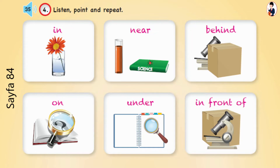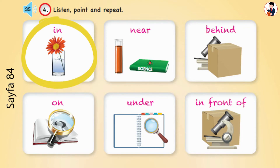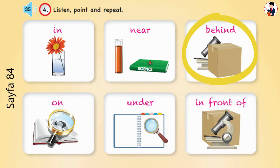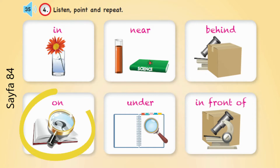Point to the flower. The flower is in the glass. Point to the tube. The tube is near the science book. Point to the microscope. It's behind the box. Point to the magnifier. It's on the notebook.